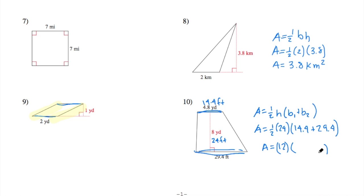Then we'll go ahead and add our two bases together, and that will give us 43.8. And then we'll go ahead and multiply those together to get 525.6 feet squared. Now we could have also done this in yards. If you had done it in yards by dividing the 29.4 by 3, we would have got 58.4 yards squared.